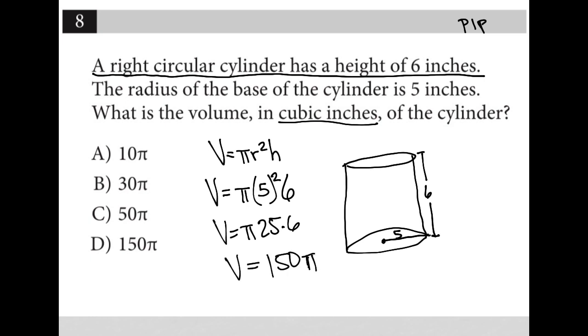So we always put the number before the symbol pi. So instead of pi 150, it's 150 pi. So that's our answer. And therefore, choice D is the correct answer.